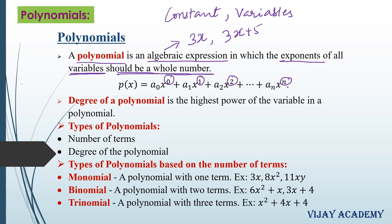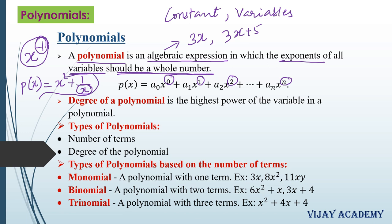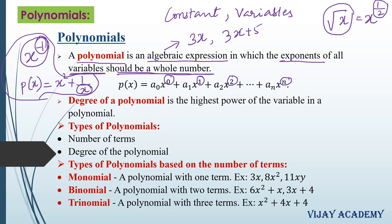For example, if the polynomial in x equals to x square plus 1 by x, this is not a polynomial because x is present in the denominator. When you write this in the numerator, it becomes x raised to the power minus 1, so the exponent is not a whole number. Similarly, square root of x is also not a polynomial because it can be written as x raised to the power 1 by 2, which is a fraction — not a whole number. We cannot consider such expressions as polynomials.